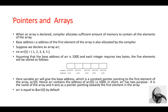In this video we will discuss pointer with array and pointer with functions. Pointers are variables which contain the addresses of other variables. With an array, a pointer stores the starting address of the array. The array name itself acts as a pointer to the first element. If a pointer variable stores the base address of an array, we can manipulate all array elements using that pointer. Pointers can also be associated with multidimensional arrays, and we can create an array of pointers to store multiple addresses.